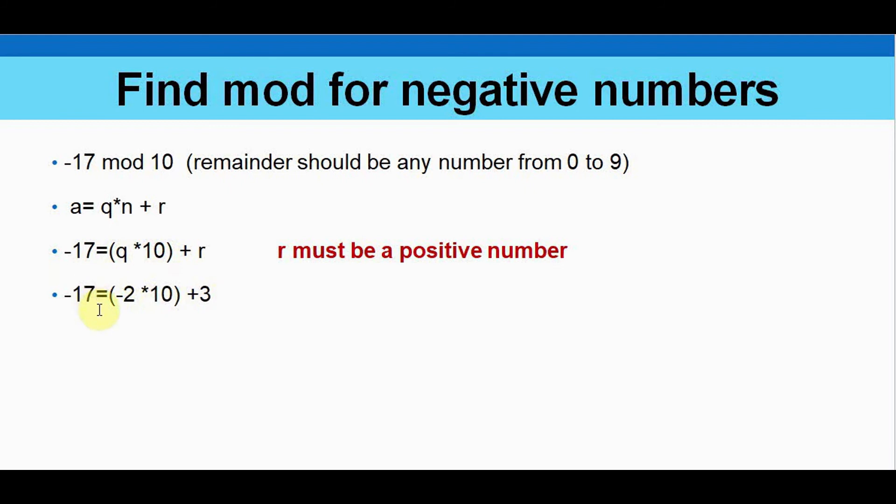So you can start checking from minus 1. Minus 1 into 10 plus anything you will not get minus 17. So I have started with minus 2 into 10 plus 3. We got minus 17. So in this case the remainder will be just 3. So minus 17 mod 10 you will get 3. This also can be represented in terms of congruence. Minus 17 is congruent to 3 mod 10.